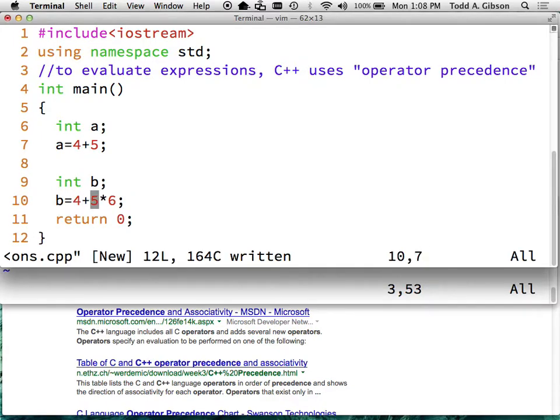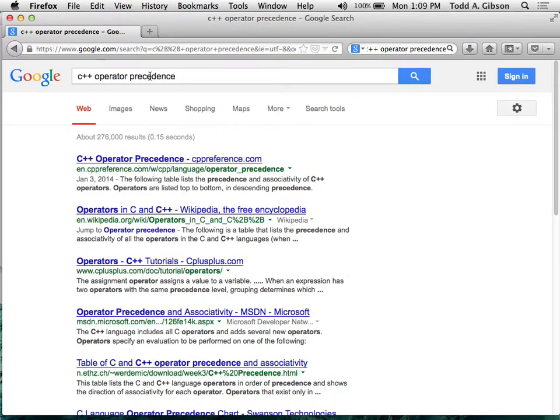These are operators. This is the addition operator. This is the multiplication operator. This is the assignment operator. As far as the language is concerned, they're all just operators. And it needs to follow rules of operator precedence to know what to do.